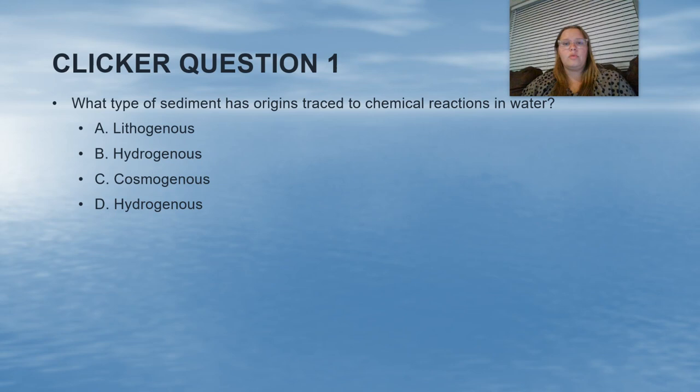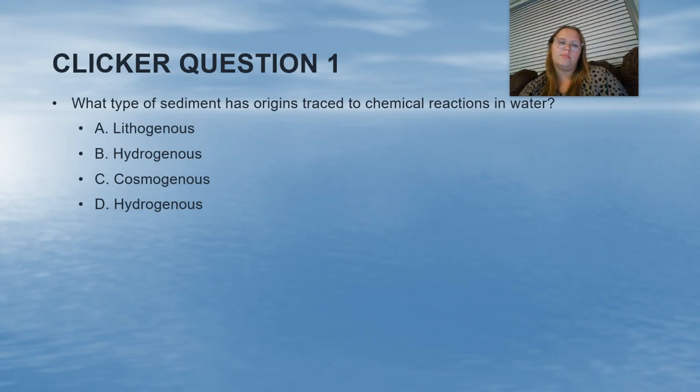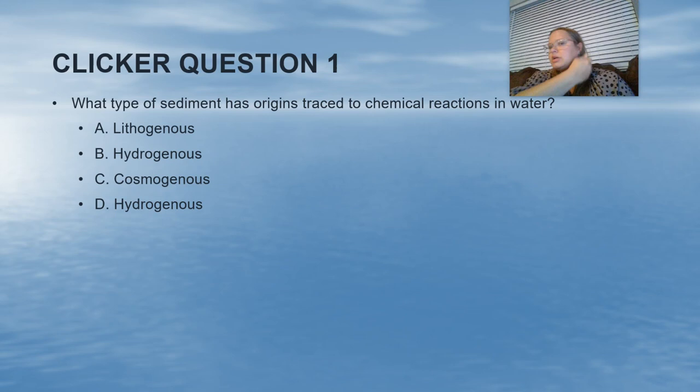Now we have our first clicker question. Everyone should have their clicker paired with the PowerPoint. The question is: what type of sediment has origins that can be traced to chemical reactions in water? Your options are lithogenous, hydrogenous, cosmogenous, and — I'm sorry, I put hydrogenous twice; I meant biogenous for D. So disregard D and choose from the remaining three. At this point, the next slide would show student response data. If many students chose the wrong answer, we'd go back to review that material; if most chose correctly, we can move on to the next topic.